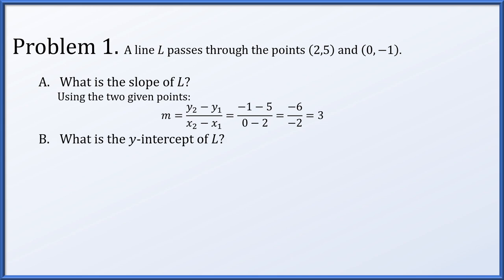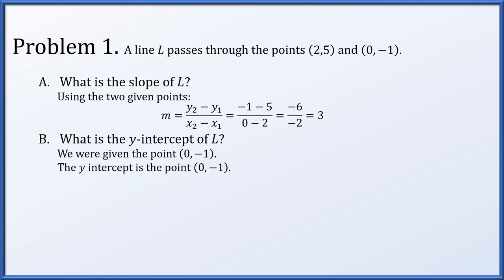Second, what is the y-intercept of the line L? We were given that the point (0, -1) is on the line. In other words, if x equals 0, then y must equal -1. So the y-intercept is that point, (0, -1).